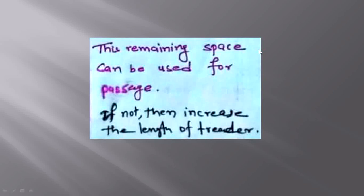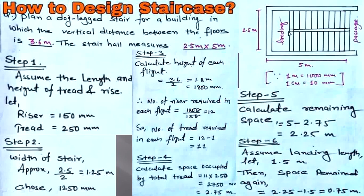The remaining space can be used for the passage at floor level, or you can increase the width or length of the layout. You can also increase the number of steps; in that case, you need to minimize the riser height. If you minimize the riser height, there will be more number of treads, and with more treads your distance will match more easily. The staircase requires four columns.